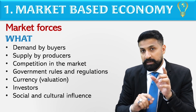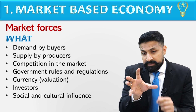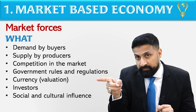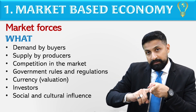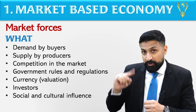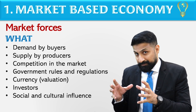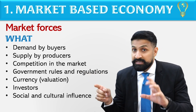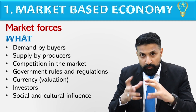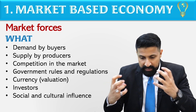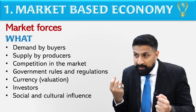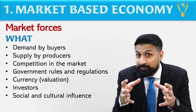The first market force is demand by the buyer — how much demand is available in the market. This will determine the price and the availability of goods and services. The second market force is supply by the producer — how much supply the producer is willing to offer at a given price. The third market force is competition in the market — when similar or substitute products are available, prices begin to fall.